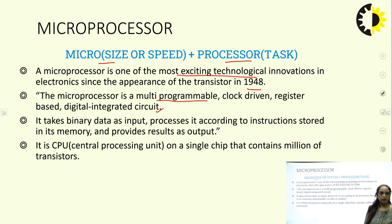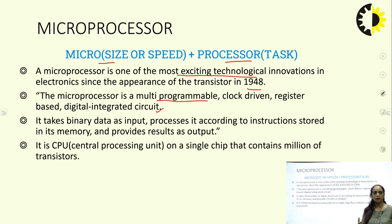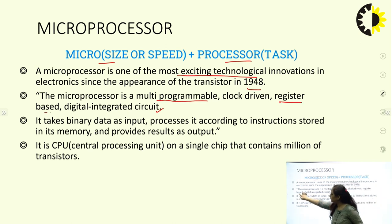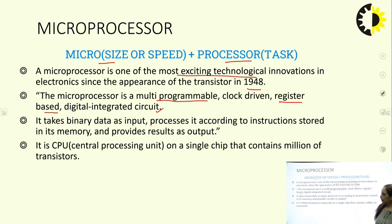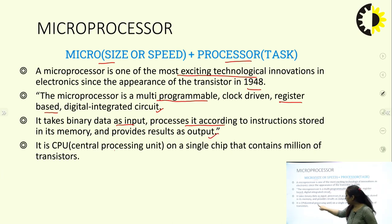Microprocessor is multi-programmable, meaning we can perform n number of operations with its help. It is clock-driven because we have to synchronize each operation on the same clock pulse. It is register-based because we deal with multi-bit data — we can have 4-bit, 8-bit, 16-bit, 32-bit, and 64-bit microprocessors. It takes binary data as input, processes it as per the instructions stored in memory, provides results as output, and behaves as a central processing unit on a single chip containing millions and billions of transistors.